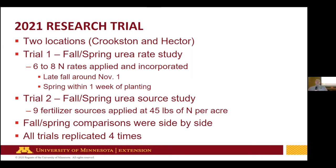This trial started in the fall of 2020 with the first fall applications. We have two locations — one in the northern region at Crookston and one in the southern growing region at Hector. There are actually two trials at each location. The first trial is a fairly simple fall-spring urea study with non-treated urea looking at six to eight nitrogen rates depending on the location. Late fall applications are around November 1st, targeting when soils should stabilize at 50 degrees, which is what we'd recommend to limit conversion to nitrate. Spring applications are within one week of planting.